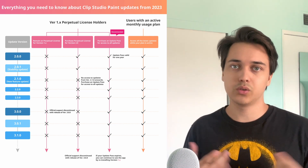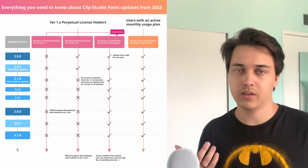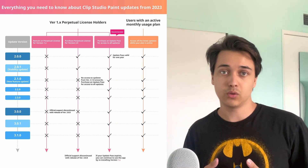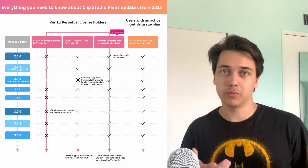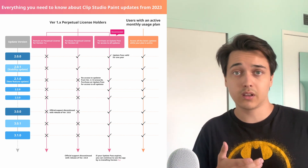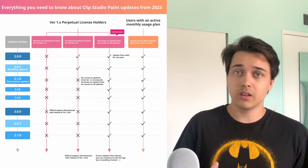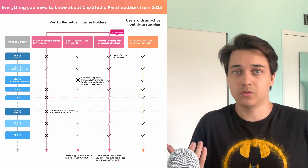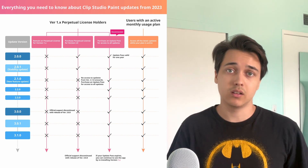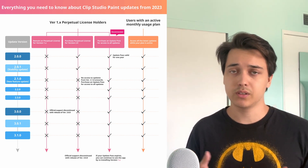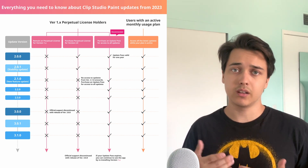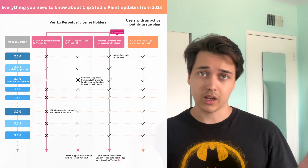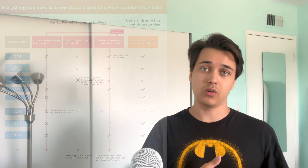There's no problem with using software without bug fixes, because there are some old softwares that people still use. For example, people still use Photoshop CS6. Yes, there are some bugs in there, but it's still really good software if you want to do basic painting and editing. It's not like if they stop updating it, it's going to completely destroy your laptop. Obviously, it depends on which system you are on.